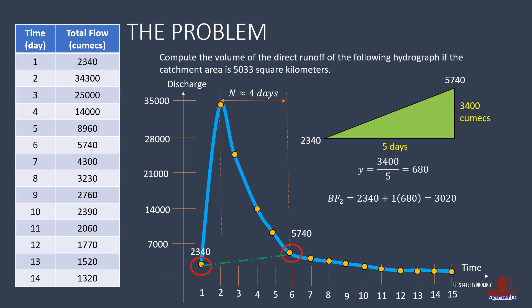For the base flow on the second day, take the reference height of 2340 and add one increment of 680, making 3020. For the third day, base flow is computed as 2340 plus twice of the increment, producing 3700 cumecs. The fourth day has a base flow of 2340 plus 3 times 680. This is simplified as 4380. And on the fifth day, base flow is 2340 plus 4 times 680, giving 5060 cumecs.